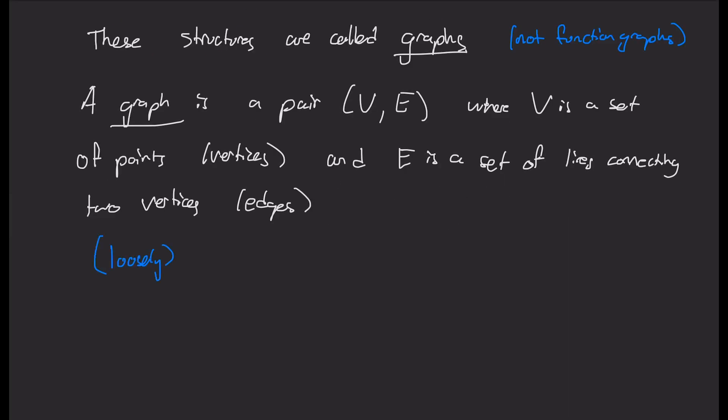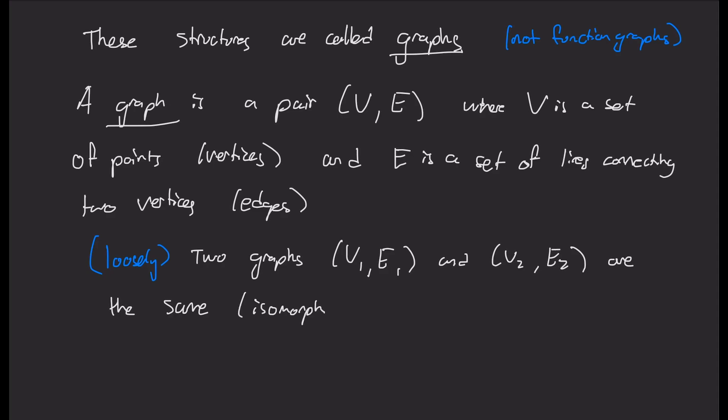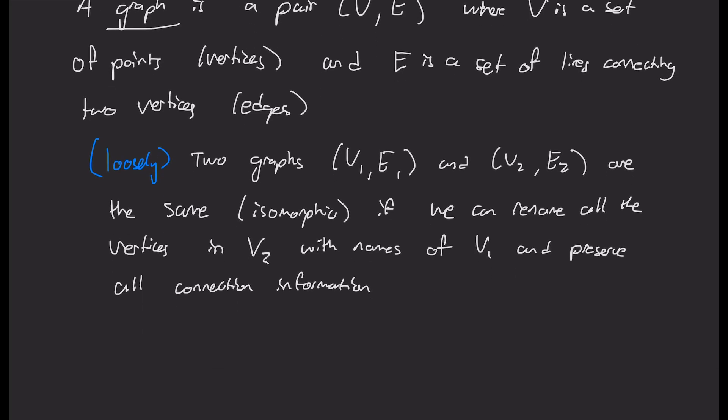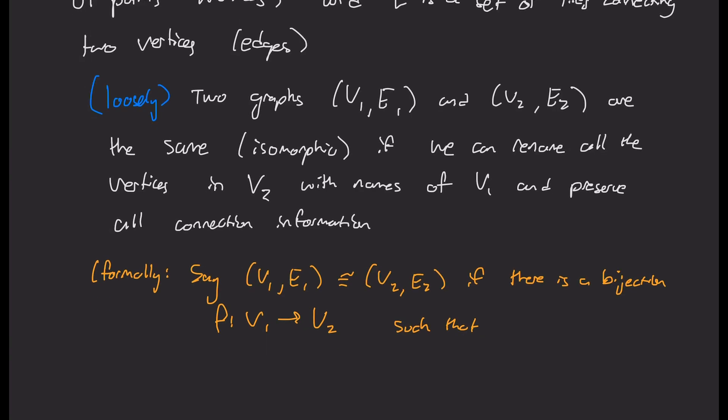And we can say loosely that two graphs, let's say V1, E1 and V2, E2 are the same or isomorphic if we can rename all the vertices in V2 with names of V1 and preserve all connection information. So sort of like we did at the start. Or if you're into a more formal language, we can say that V1, E1 is isomorphic to V2, E2 if there's a bijection on the vertex sets that preserves the edges.